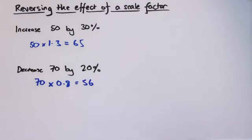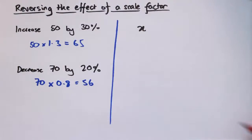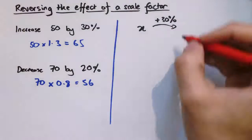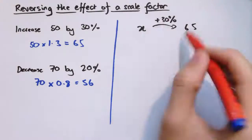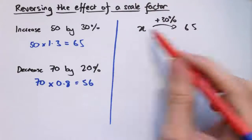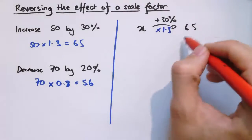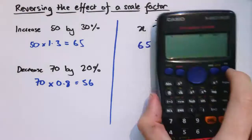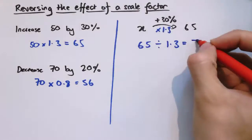The equivalent problem might say: there was some initial value and it was increased by 30%, and it's now 65. The answer is going to be 50. But if we didn't already know that, what would we do? I want to undo the operation that took x to 65, and what that was was multiplying by 1.3. So to undo multiplying by 1.3, we need to apply its inverse operation — do 65 divided by 1.3 — and that gets us back to 50.